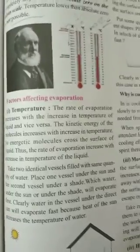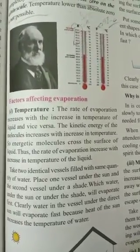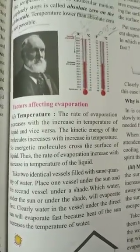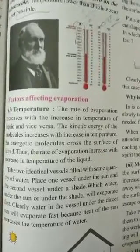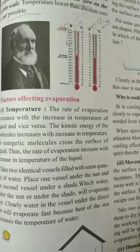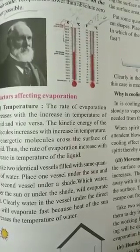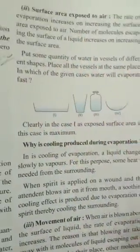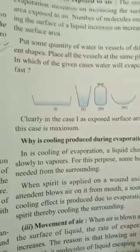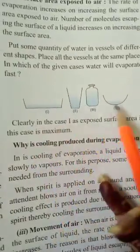Now, the factors affecting evaporation. Temperature is one factor — when temperature is high, evaporation is quick. When humidity is high and temperature is low, it will be cold and evaporation will slow down. Surface area is another factor — different shapes give different surface areas, and if surface area is less, evaporation will be less.